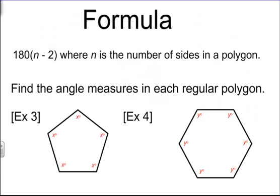Here's the pattern as a formula: 180 times (n minus 2), where n is the number of sides in a polygon. Make sure you write that down — 180 times the quantity n minus 2, where n is the number of sides.